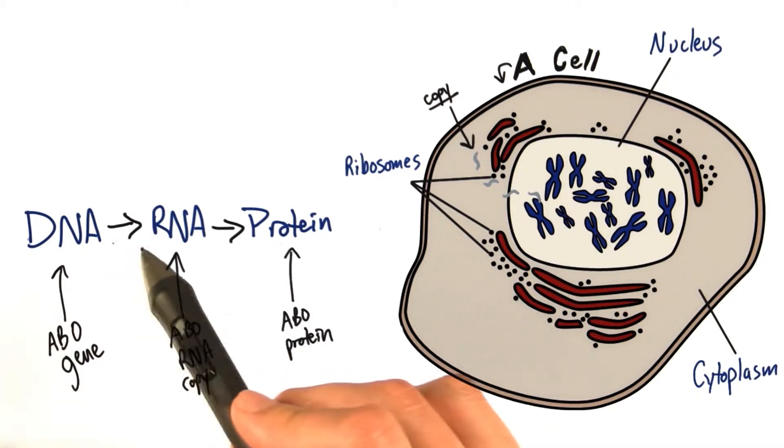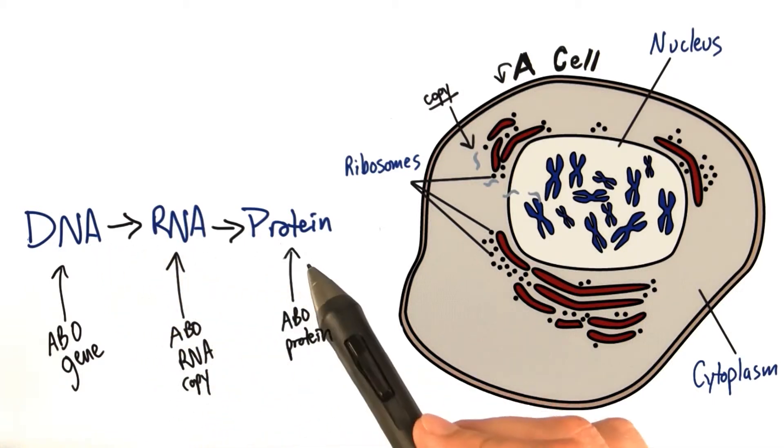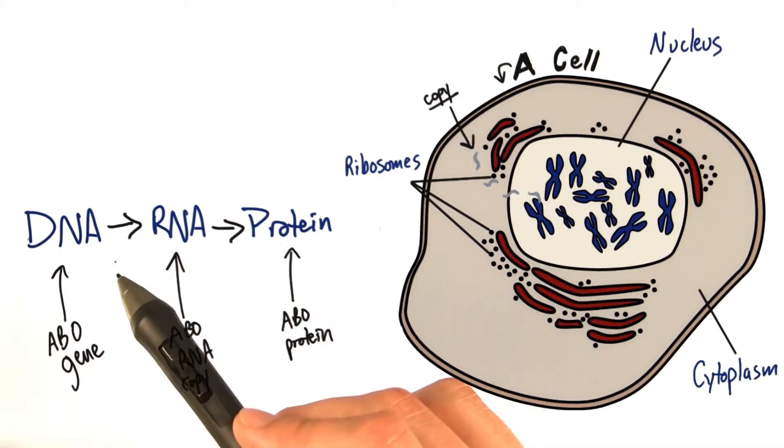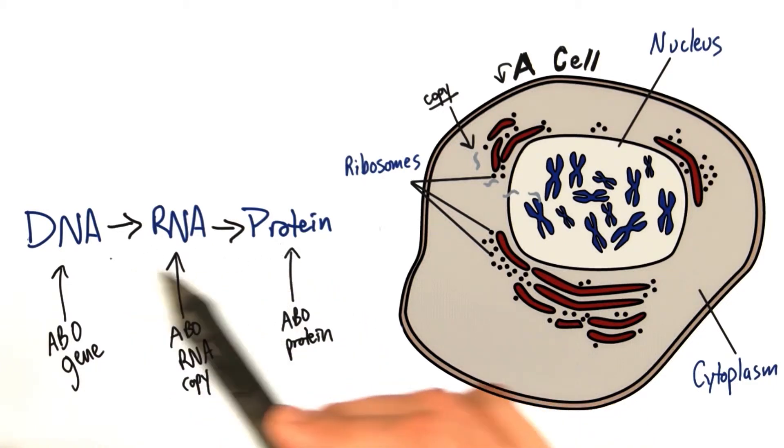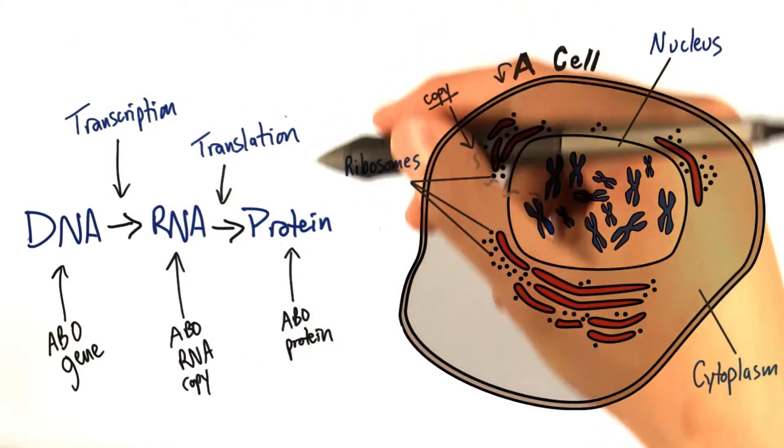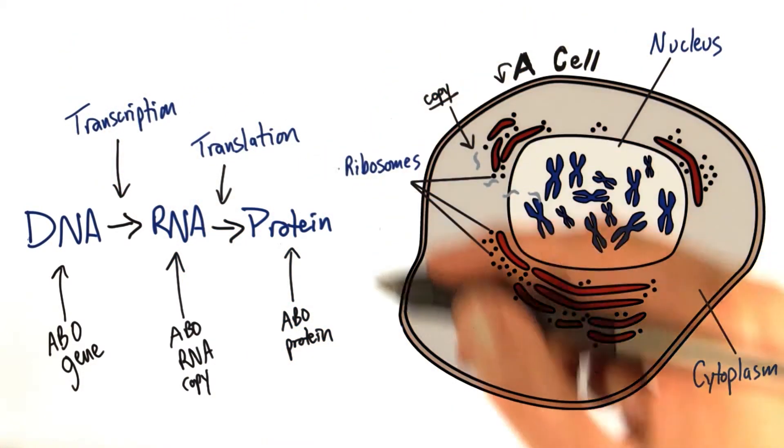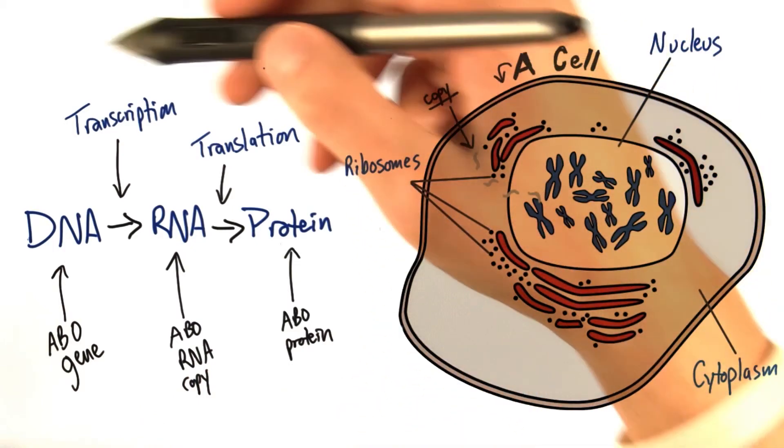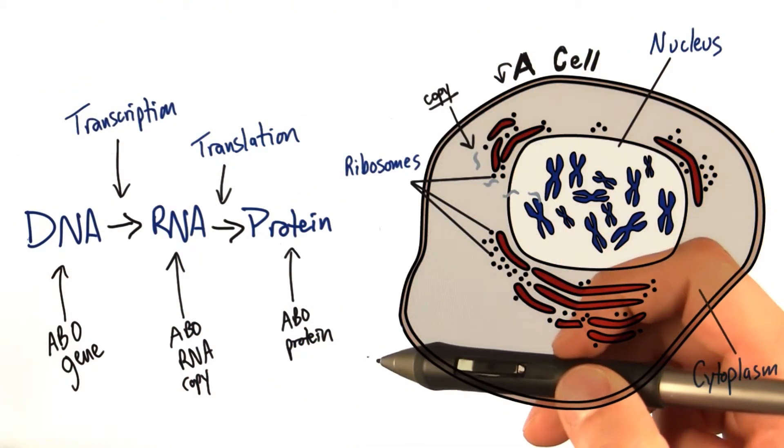Now these two arrows here that connect DNA to RNA and RNA to protein are what we're about to dive deep into. These processes are called transcription and translation. And by the end of this lesson you'll see exactly how a DNA code is turned into protein.